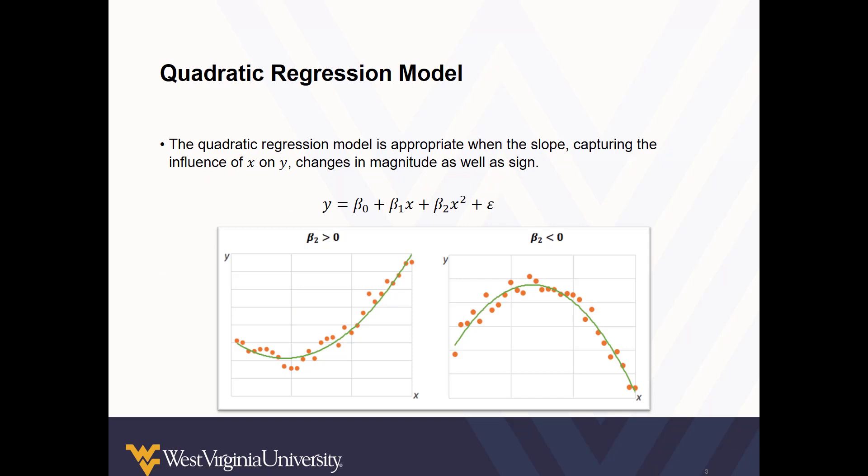A quadratic transformation is appropriate when the slope changes in magnitude as well as in sign. The scatter plots shown with their trend lines show how a quadratic transformation may better suit the data than a linear approach might.